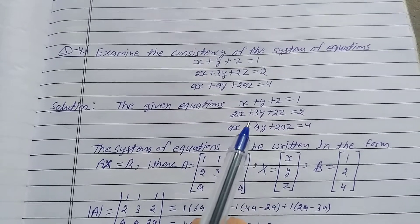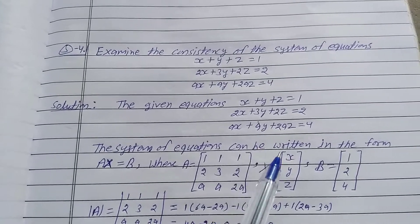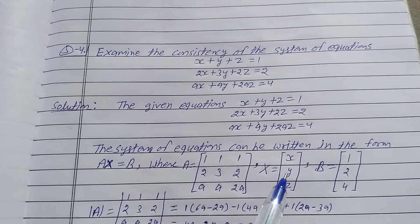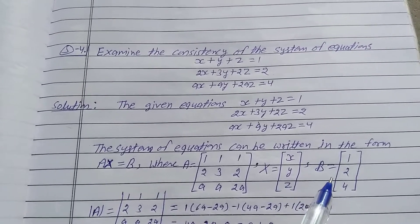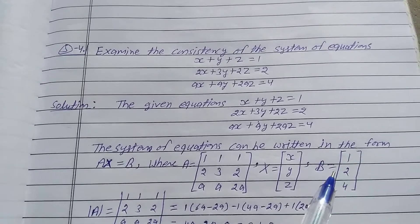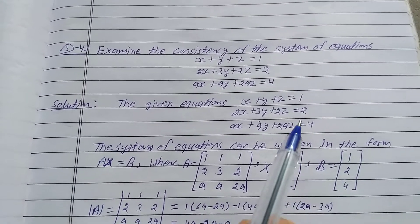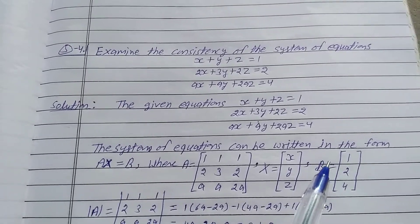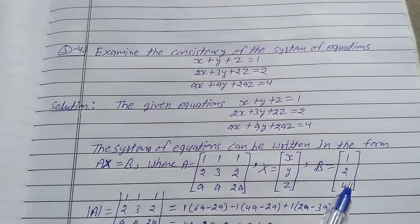X is the variable matrix equal to x, y, z. And B is the constant matrix, so B is equal to 1, 2, 4.